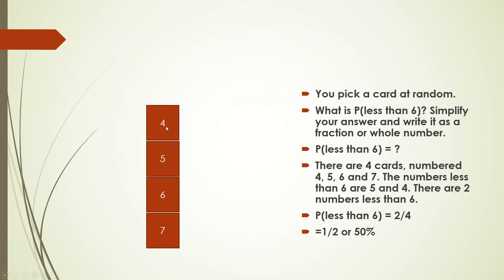Suppose you pick a card at random. We have four cards: four, five, six, and seven. The question is: what is the probability of picking a number less than six? The numbers less than six are five and four — so there are two numbers less than six out of four total cards. Two divided by four gives a probability of 50%.